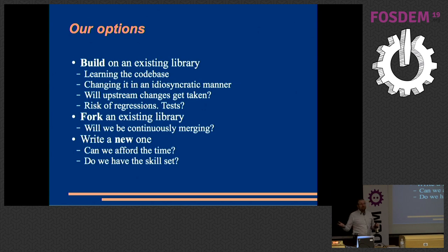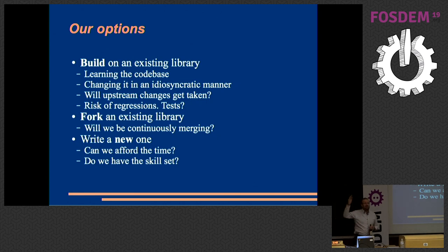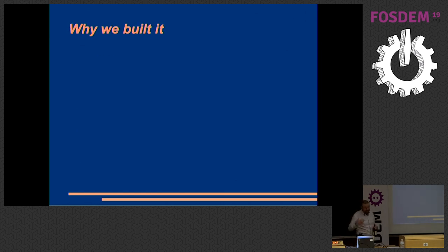You've got the standard three options: you take an existing project and work on it — you've got to talk to the project team, learn the code base; you fork it because you don't want to talk to the other developers; or you just say you're going from scratch and build it yourself. It turned out that last option was what we had to take.